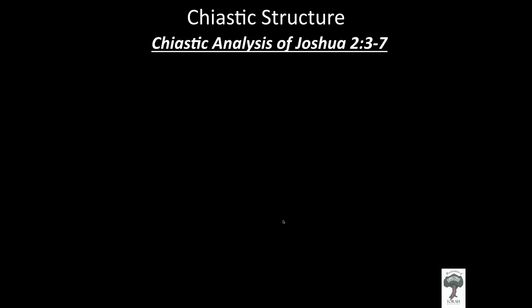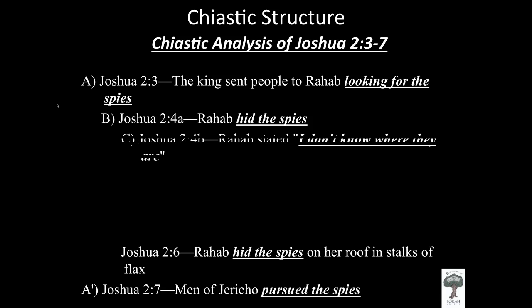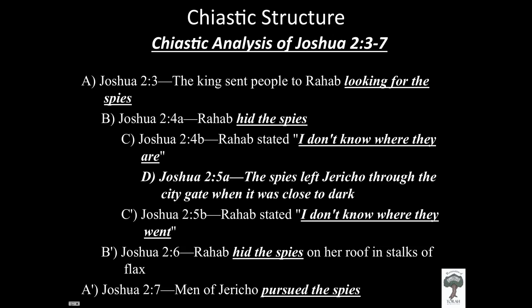Your whole Bible is written this way, and all of the stories are written in thematic patterns. Let's look at a chiastic analysis of Joshua 2, verses 3 through 7. In verse 3, the king sent people to Rahab looking for the spies. Going chronologically through the passage — verses 3, 4a, 4b, 5a, 5b, 6, and 7 — there is a thematic pattern that emerges.